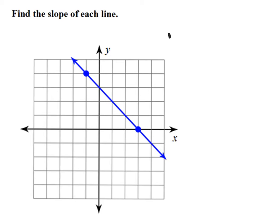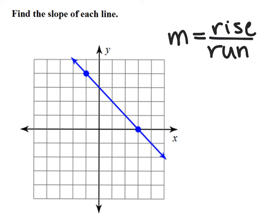In the next example, we still have to figure out what the rise and the run are. Starting at the leftmost point, I first move up or down vertically. I'm moving from the first point down to the point on the right — one, two, three, four units. Because I'm moving downwards, this is negative four.